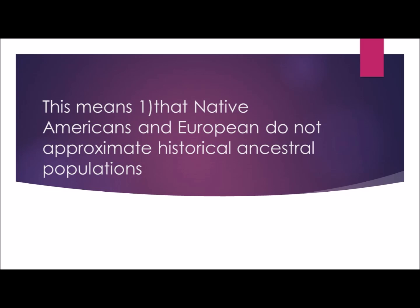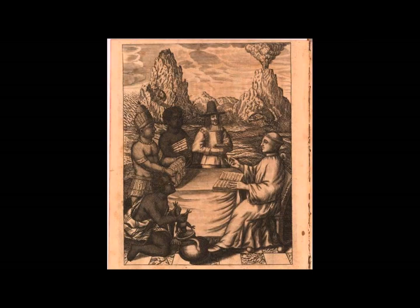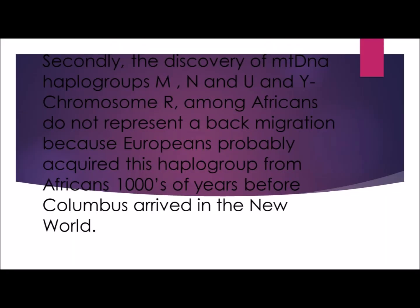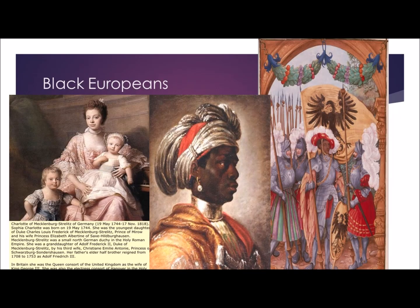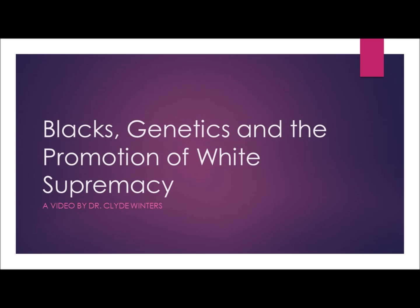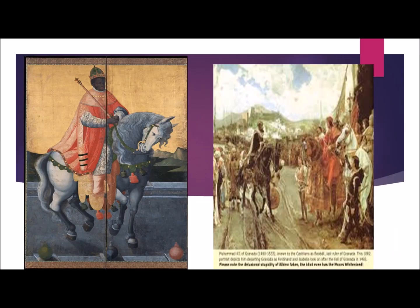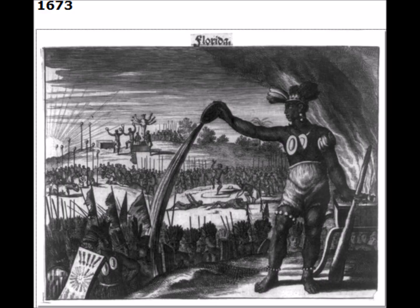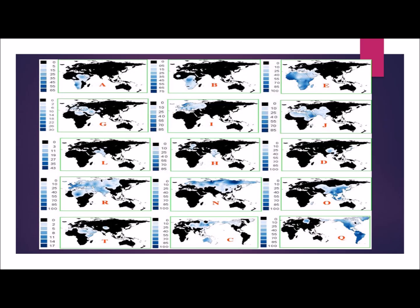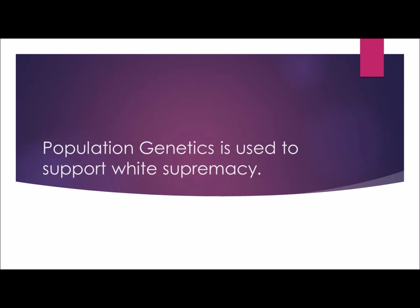Scholars know that Black people and white people were in contact before 1492, but they created a lie to keep us ignorant about our past. In summary, population genetics lacks a foundation because Africans have been in contact with Native Americans and Europeans for thousands of years before Columbus found America. Native Americans and Europeans do not approximate historical ancestral populations. The discovery of mtDNA haplogroups M, N, and U and Y-chromosome R among Africans does not represent a back migration — Europeans probably acquired these haplogroups from Africa thousands of years before Columbus. Genetics is a science, but it is being used to create a lie about African and Black people. Black people carried these genes; white people and Native Americans acquired them through mating and mixture with African people. Genetics support white supremacy.